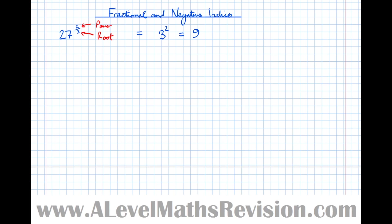Another example: 32 to the power of three-fifths. Deal with the bottom of the fraction first — that's the root we're going to take, so the fifth root of 32. What times itself 5 times gives 32? You just have to know this: the fifth root of 32 is 2, because 2 × 2 × 2 × 2 × 2 = 32. Having taken the fifth root we get 2, but we're still left with the power of 3, so we cube 2: 2 × 2 × 2 = 8.